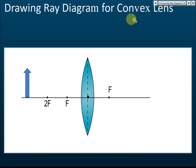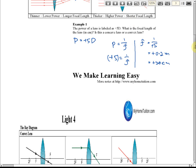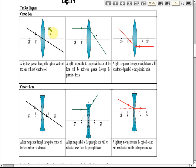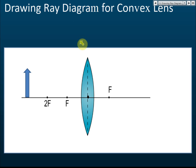We are drawing ray diagrams for lenses. For drawing a ray diagram for a convex lens, we have three rules, and for a concave lens we also have three rules. Make sure that you remember these three rules. The rules are about the same as drawing a ray diagram for concave and convex mirrors. Let's start with the convex lens.